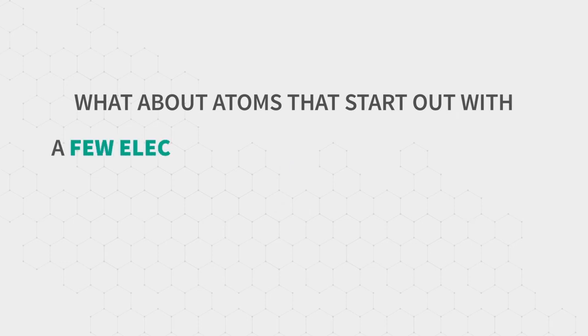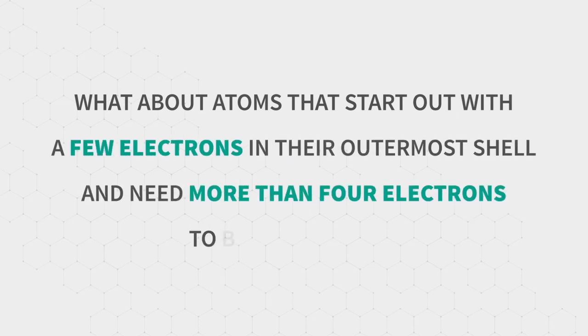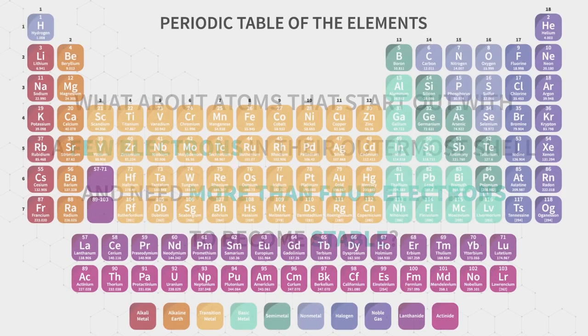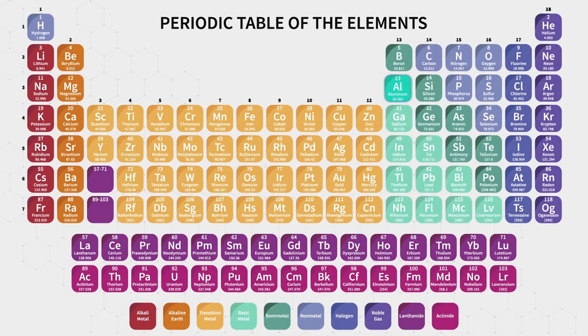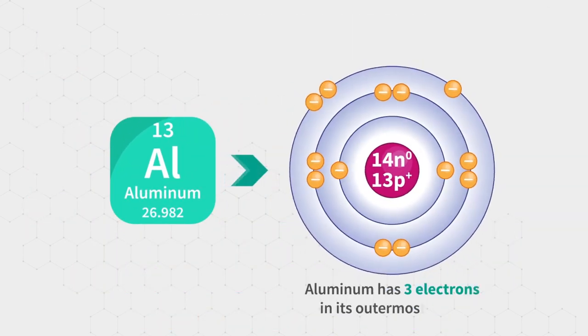But what about atoms that start out with a few electrons in their outermost shell and need more than four electrons to become stable? For example, aluminum has three electrons in its outermost shell.